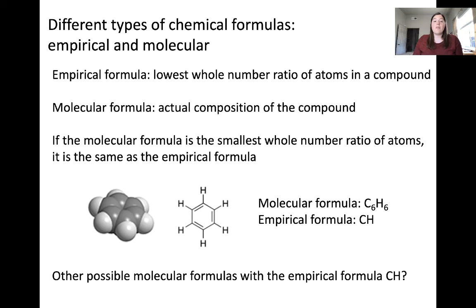What are some other possible molecular formulas with the empirical formula CH? We can determine that by multiplying CH by 2 to get C2H2, or by 3 to get C3H3, or by 4 to get C4H4, and on and on. These are all potential molecular formulas that correspond with the same empirical formula.